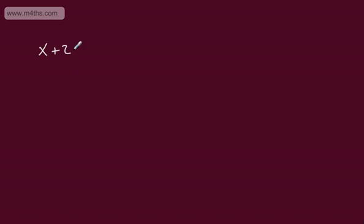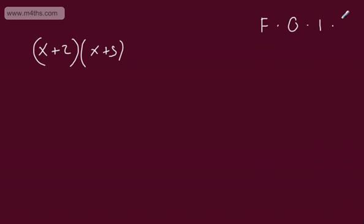In this video, we're going to look at expanding double brackets, or multiplying out double brackets. An example of a set of double brackets might be x plus 2 multiplied by x plus 5. One particular method we can use to expand double brackets is FOIL, which stands for First, Outer, Inner, Last. You don't have to use this method, but it may help you keep track of what you're doing.